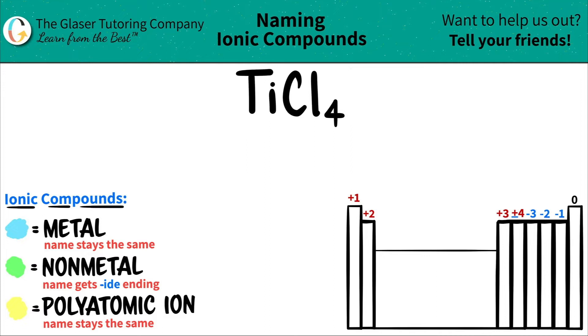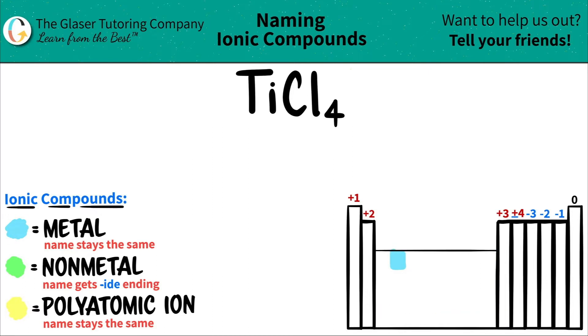Titanium, if we look on the periodic table, it's right here. Ti is right here. It's part of the transition metal group, so it's a metal — transition metal, metal.